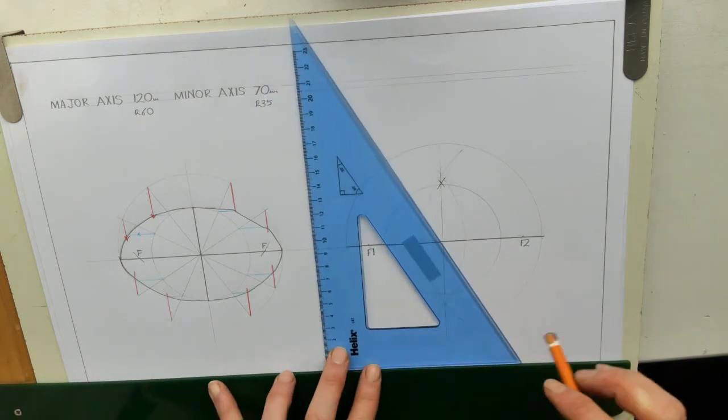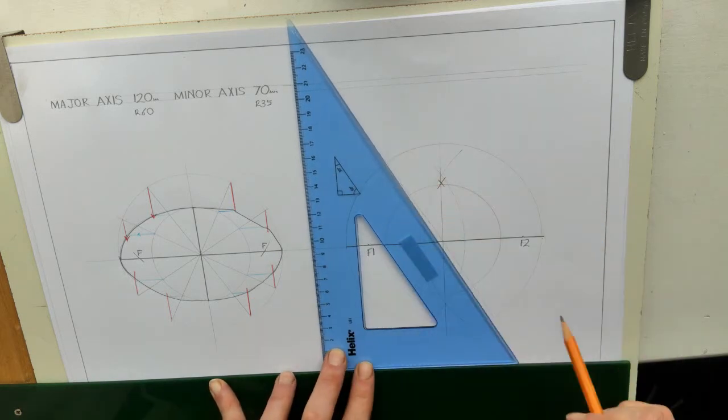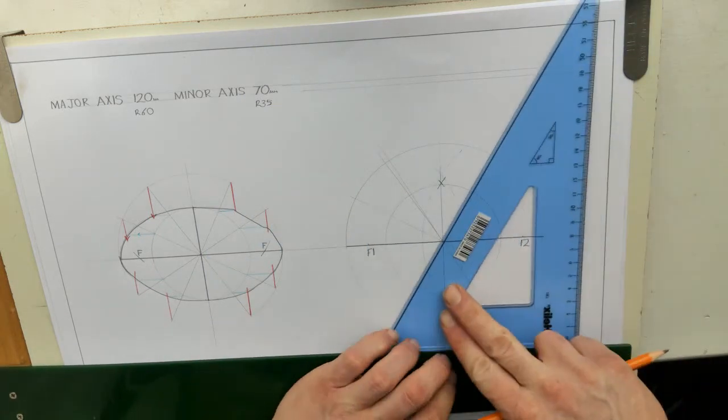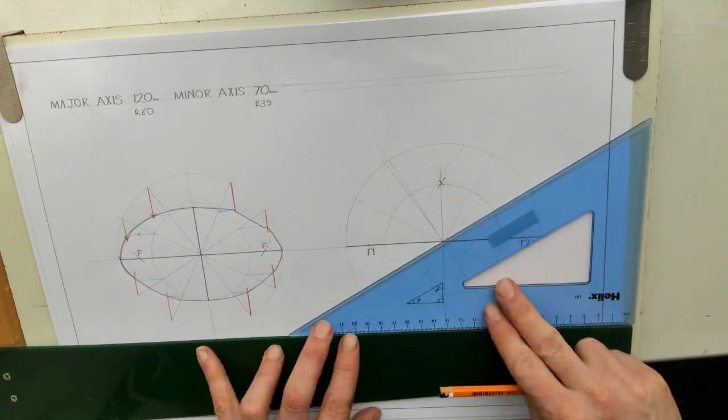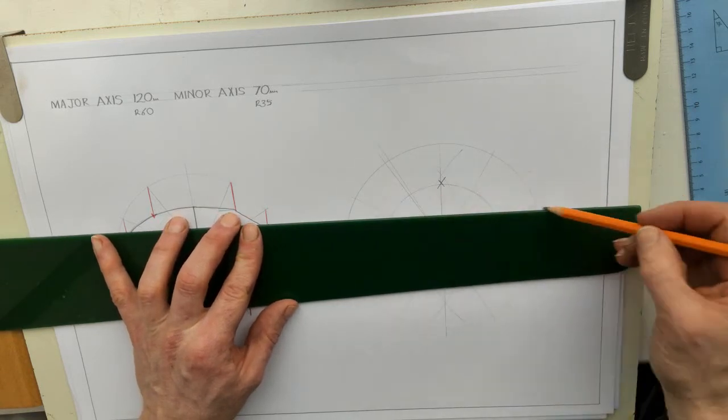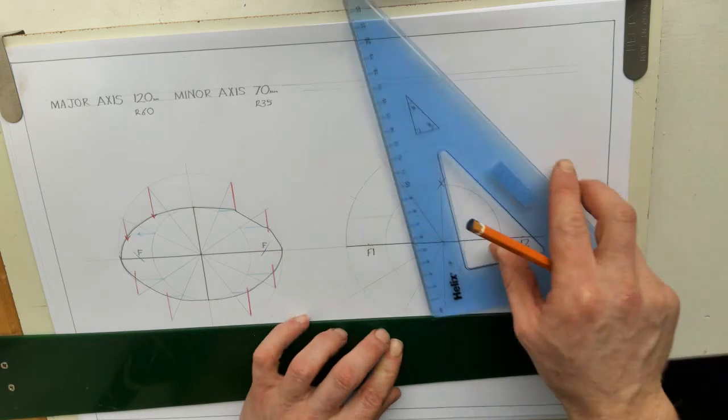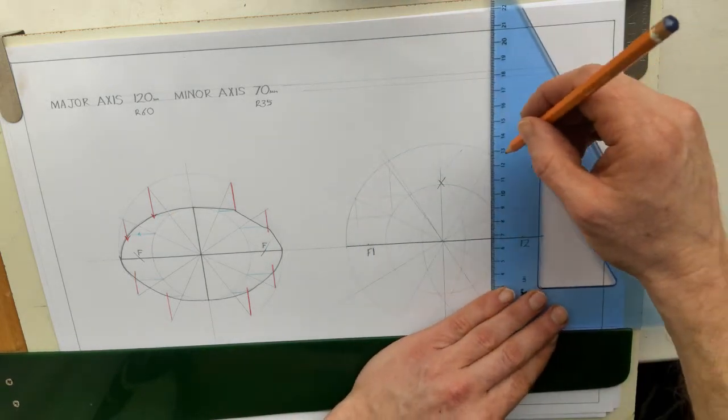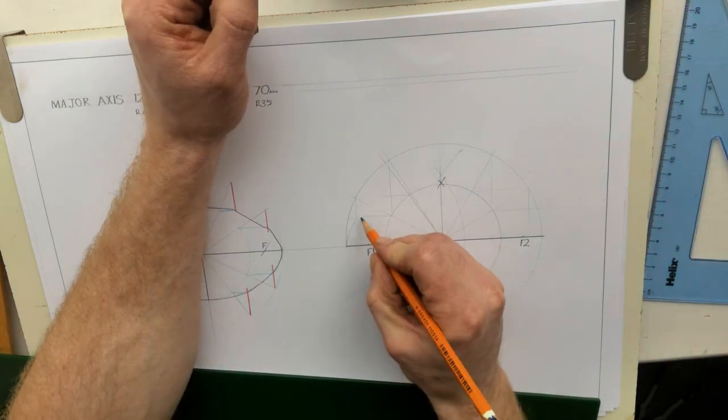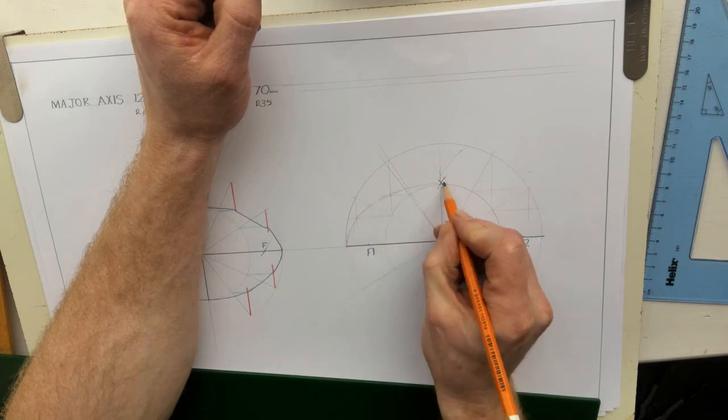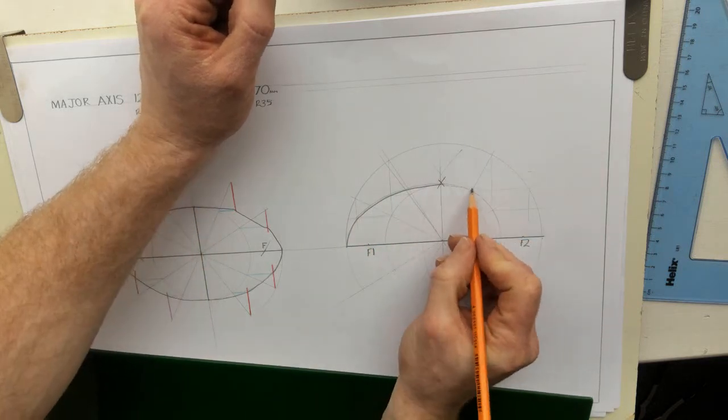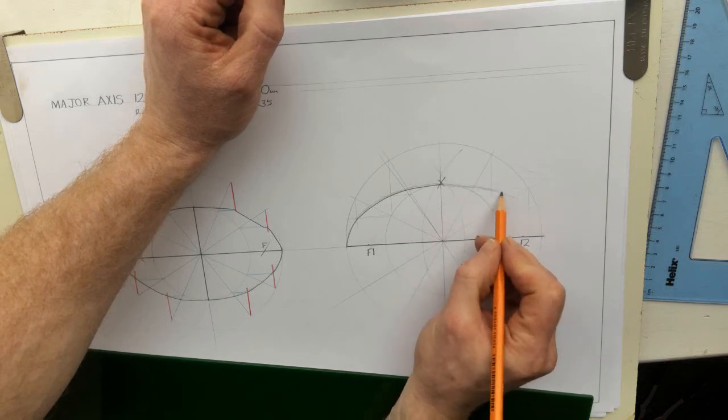The next one, I'll just put it on the top of the ellipse here. And we'll do a tangent. We'll do a tangent to it. So when I put it in, I put in a light first, I put in a few curves and then I darken whichever one I think looks right.